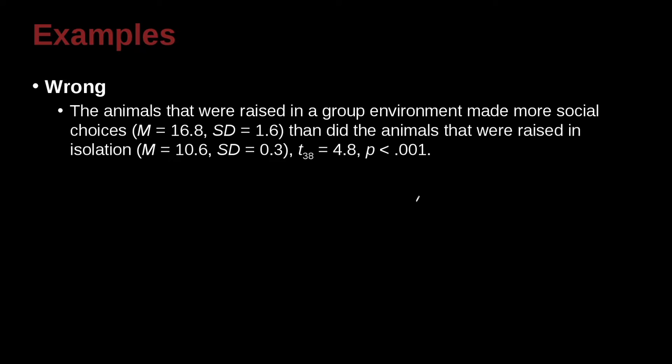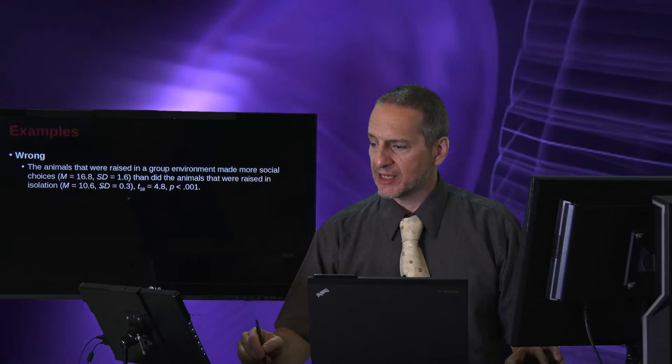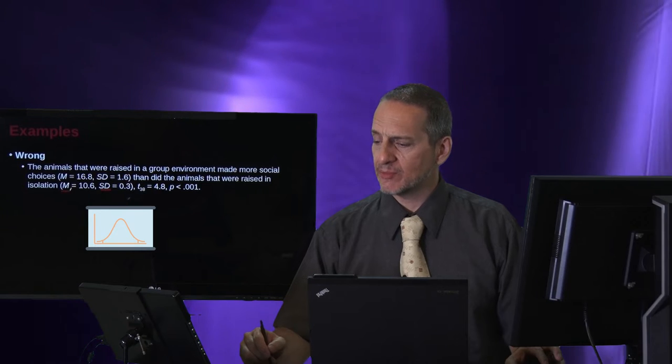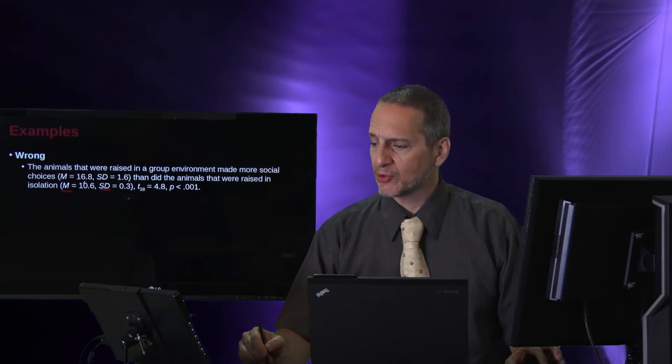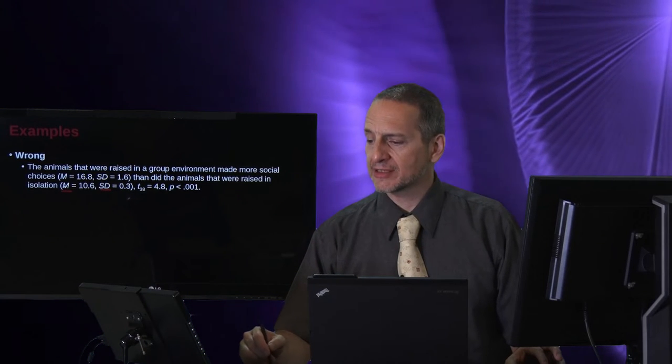The animals that were raised in a group environment made more social choices. Mean equals 16.8, standard deviation 1.6, than did the animals that were raised in isolation. Mean 10.6, standard deviation 0.3, comma t38, which is the t-test, equals 4.8 with the probability of 0.001. Here what we have is the SD is the standard deviation, the M is the mean, capital M, SD in the italics. That's correct.